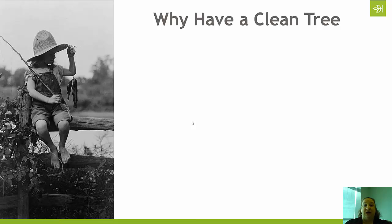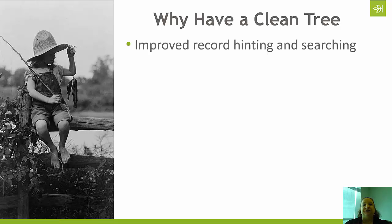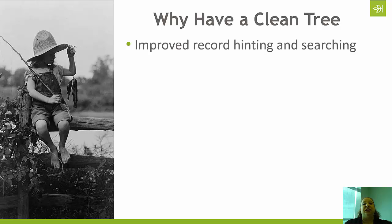Let's talk first about some of the reasons why you might want to have a clean family tree. One of the really important things is that the cleaner your tree, the more improved your record hinting and your searching process is going to be. For example, if I have a bunch of different dates and locations for an individual and I'm not really clear on what the accurate information is, putting those all in is going to confuse the record hinting algorithms and the search algorithms. So the cleaner that data is, the more accurate those hints and search results are going to be.